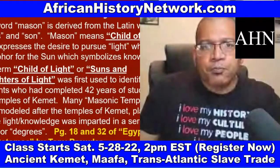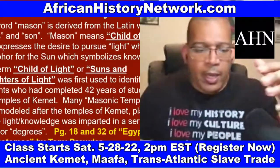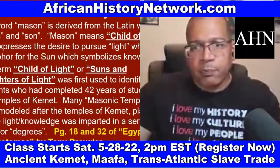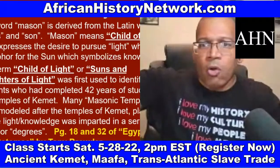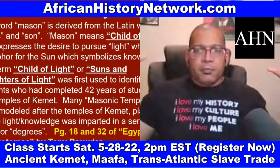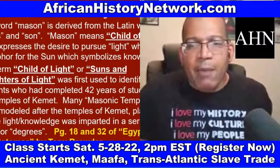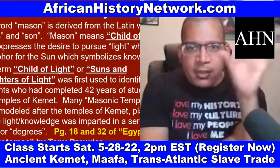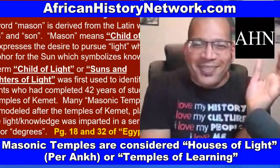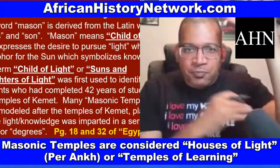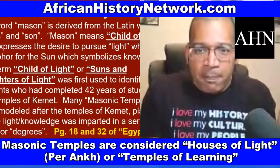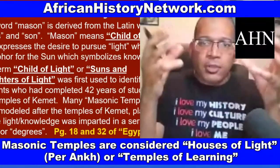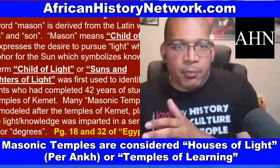Europeans were trying to explain African cosmology and African spiritual systems without really having a framework to understand it. The word Mason is derived from 'mass' and 'sun' — Mason means child of light. The term 'child of light' or 'sons and daughters of light' was first used to identify students who had completed 42 years of study in the temples of ancient Kemet. Many Masonic temples were modeled after the temples of ancient Kemet — places where light, or knowledge, was imparted in a series of steps or degrees. Even today, when a cartoon character gets an idea, a light bulb goes off over their head — associating light with knowledge. The term 'bright idea' — bright as in lucid, as in light — associates light with knowledge.